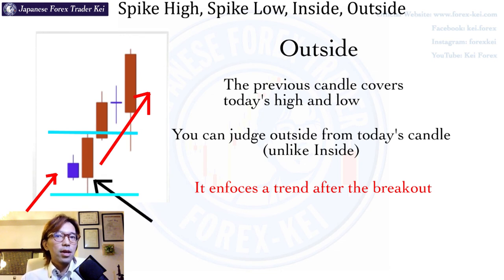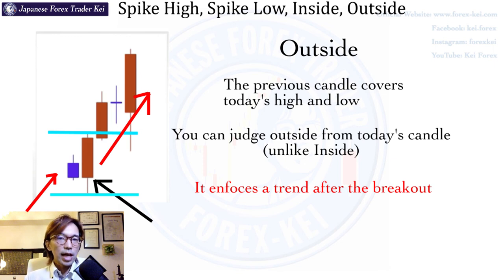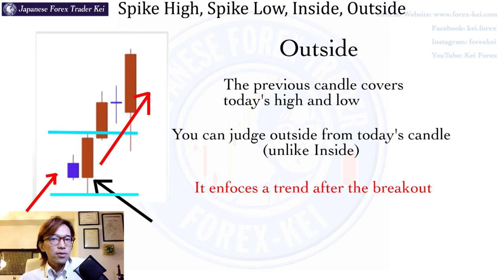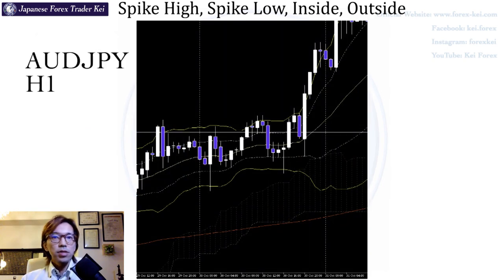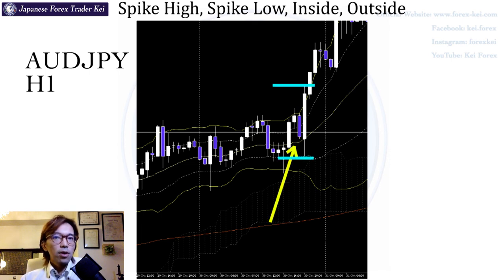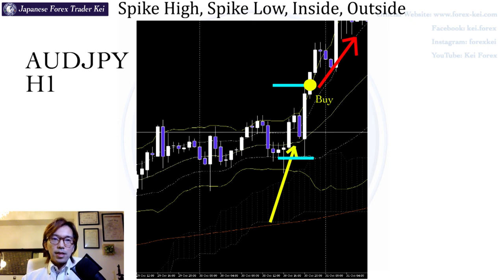Note that with the outside bar, you can judge it today. With a daily chart, for the inside bar you still don't know if it's going to be inside or not until you see the next candlestick. But for the outside, you can tell from today, after today's candle covers the previous day's high and low. For example, look at this chart — this is a 1-hour chart of OZJP, and while the market has been in an uptrend, if you look at this candle right here, you can see there's a clear outside bar. The high and low are engulfing the previous high and low, and after this, the price kept going up. So if you buy here, you can get all these pips later on.